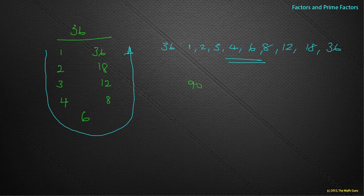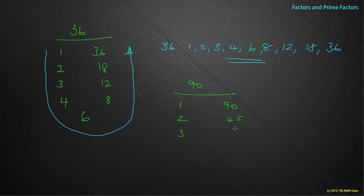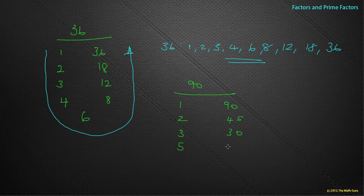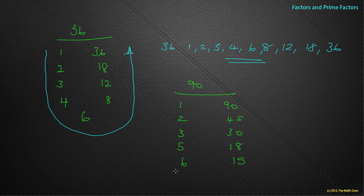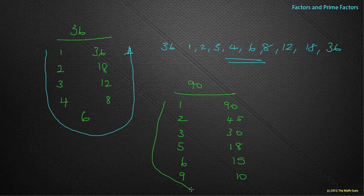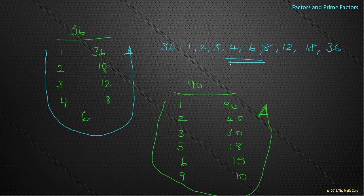Let's look at ninety. One and ninety, two and forty-five, three and thirty, four doesn't go in, five and eighteen, six and fifteen, seven doesn't, eight doesn't, nine and ten. And there we go — I have my horseshoe. The factors of ninety are one, two, three, five, six, nine, ten, fifteen, eighteen, thirty, forty-five and ninety.